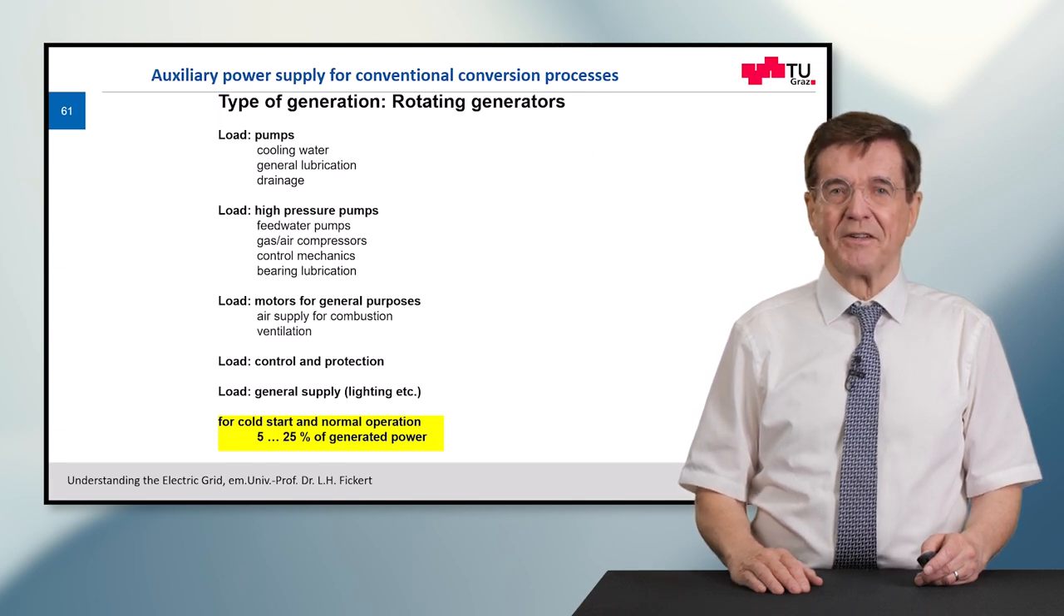For cold start and normal operation of such a conventional conversion process, we need something between 5 to 25 percent of the generated power. If in the case of a black start and a blackout this energy is not available on site, such a power station cannot start up. Here you can see that these auxiliary power supplies play a very important role for the survival of our electricity system.